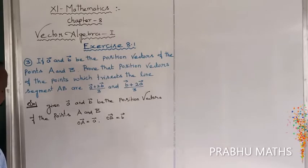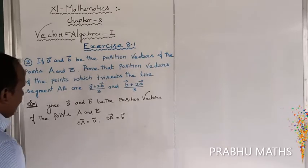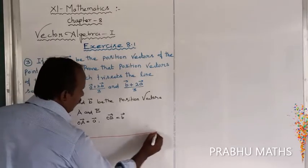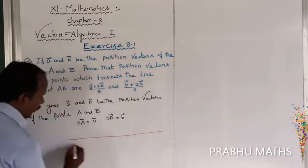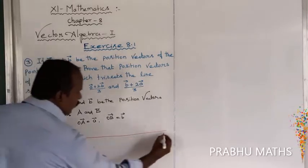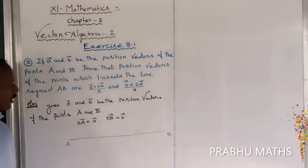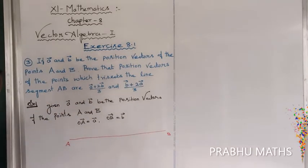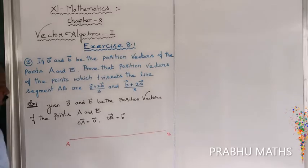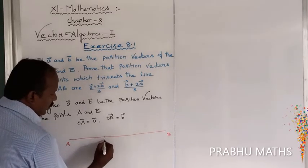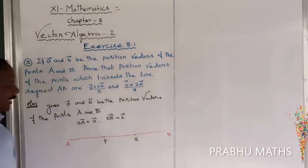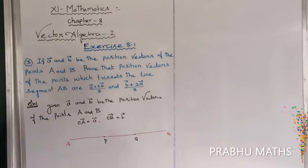Now let us draw the line segment AB. So this is the line segment AB, with A on one end and B on the other. This line segment is trisected — trisect means divided into three equal parts. Let us consider the two trisection points: the first one is P and the second one is Q.